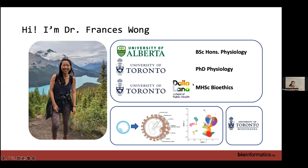I already gave a bit of an introduction about myself, but this is just to reiterate the background in which I view science and my training. I did my undergrad at the University of Alberta in the Department of Physiology — this is where I first got exposed to data, working with human datasets, and got interested in all the emerging technology. I then jumped across to Toronto to do my PhD in physiology.